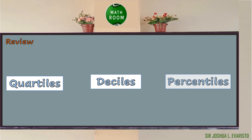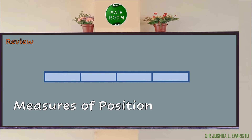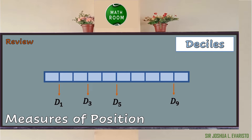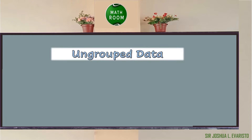Let's get started. In our previous lesson, we learned how to illustrate quartiles, deciles, and percentiles, also known as the measures of position. Measures of position give us a way to see where a certain point or value falls in a sample distribution. It is a technique that divides a set of data into equal groups. Quartiles divide the data set into four equal groups.